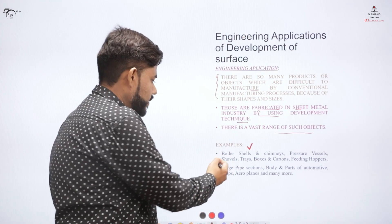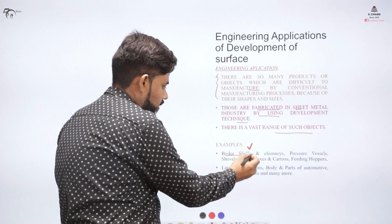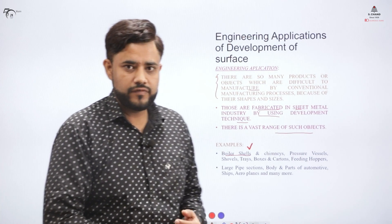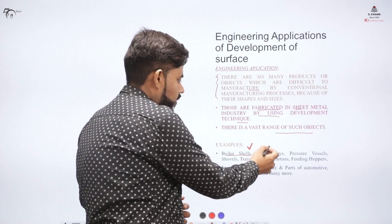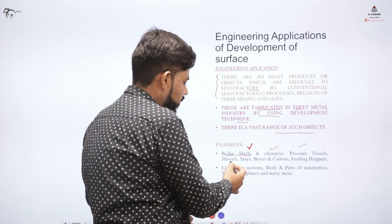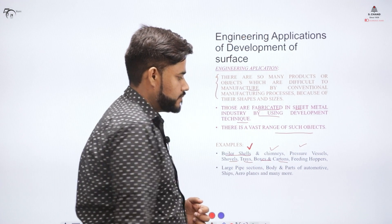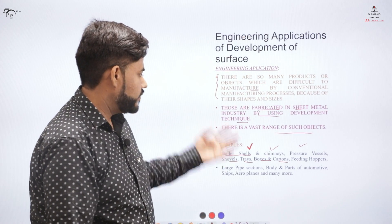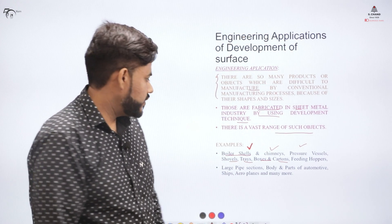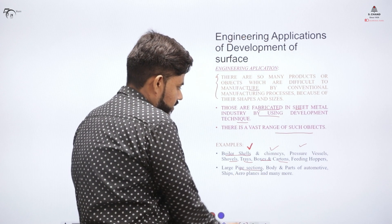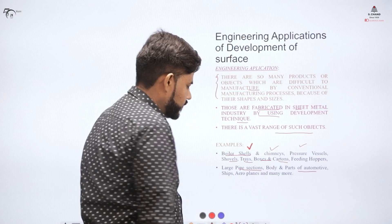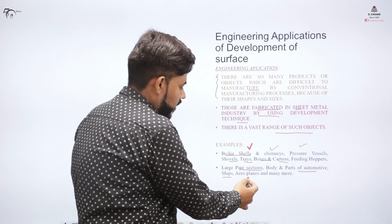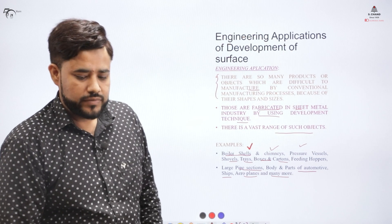There is a vast range of such objects: boiler shells, chimneys, pressure vessels, showers, trays, boxes, cartons, and hoppers are all manufactured using development of surfaces. Additionally, pipe sections, automotive body parts, ship components, and airplane parts are among the variety of objects produced with the help of this concept.